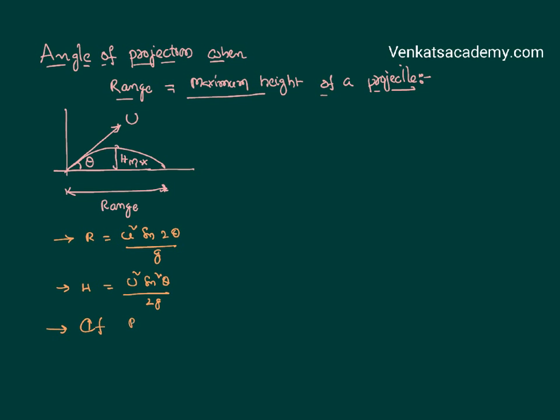Now we are talking about the case: what happens if the range of a projectile is equal to maximum height? Let us just equate these two. Range equation u square sin 2 theta by g, maximum height equation u square sin square theta by 2g. Now we can cancel this g and g, we can cancel this u square and u square.